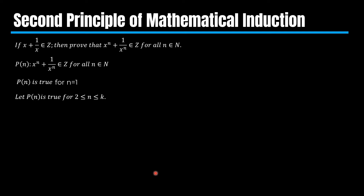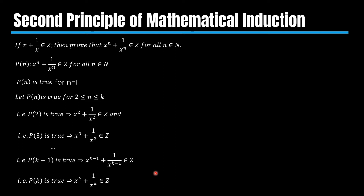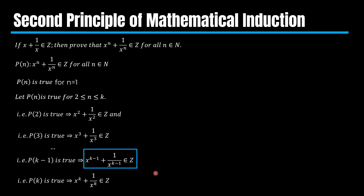Let us assume that P(n) is true for all n such that n is greater than or equal to 2 and less than or equal to an integer k. This implies P(2), P(3), and so on, P(k−1) and P(k) are all true. It means x² + 1/x² belongs to the set of integers, x³ + 1/x³ is also an integer, and so on. x^(k−1) plus its reciprocal is an integer, and x^k + 1/x^k is also an integer.